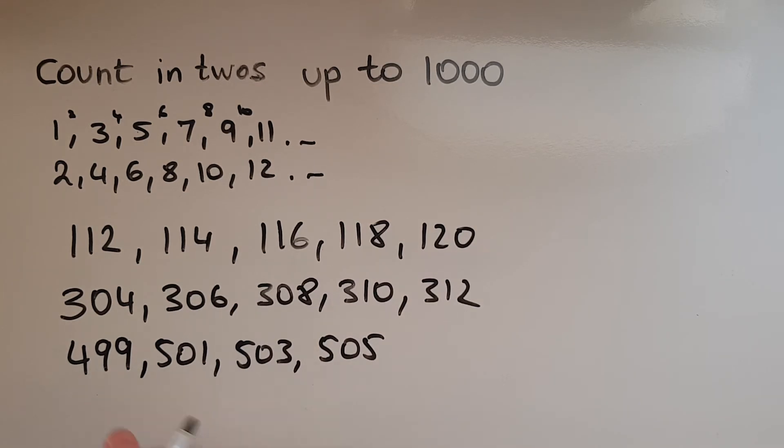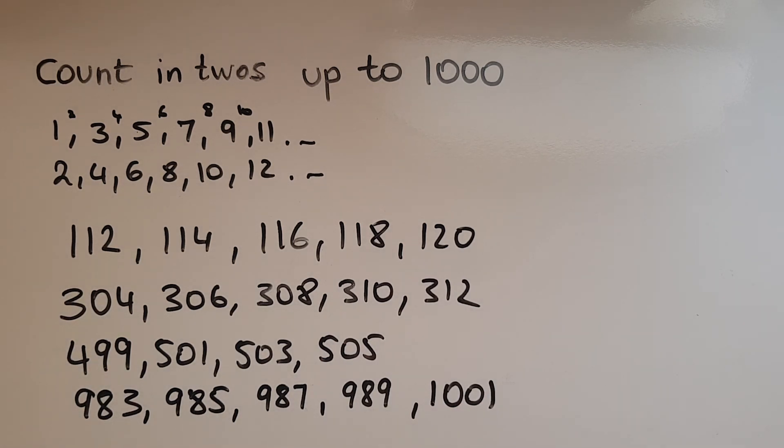So the final example, 983, 985, then 987, 989. That comes very close to 1,000. So just out of interest, the next one would be 991. This is how to count in twos up to 1,000.